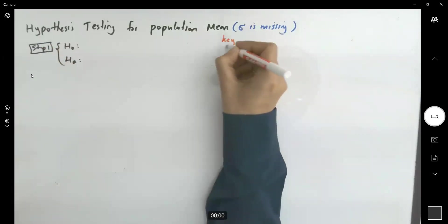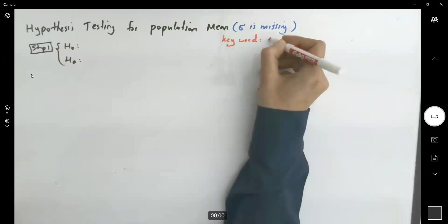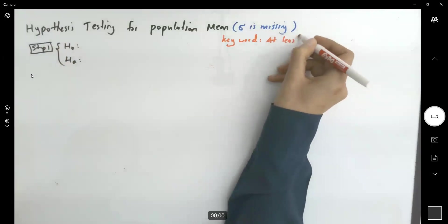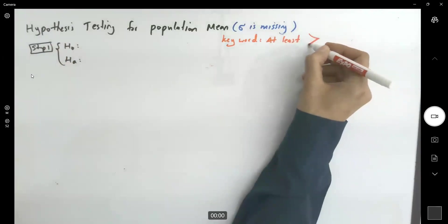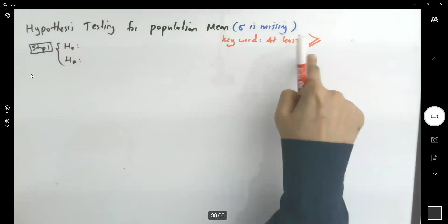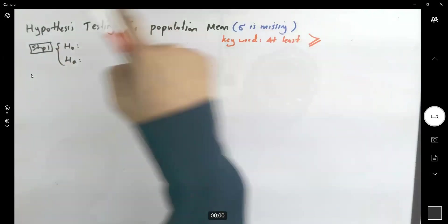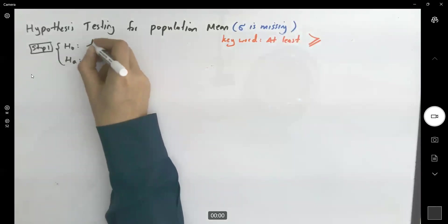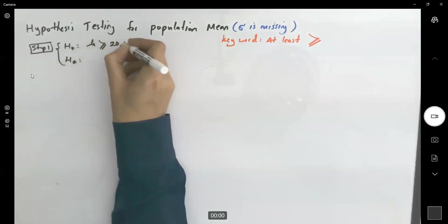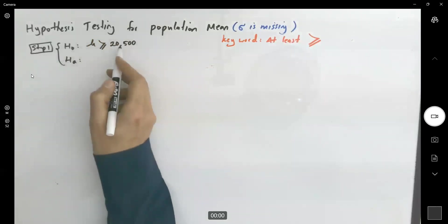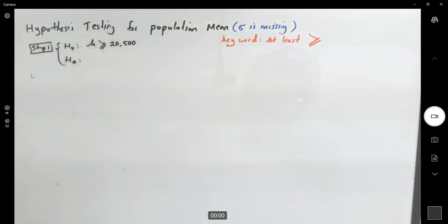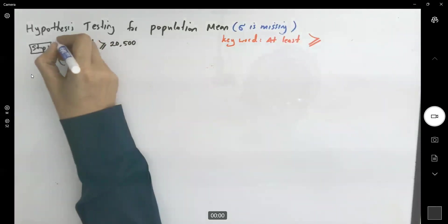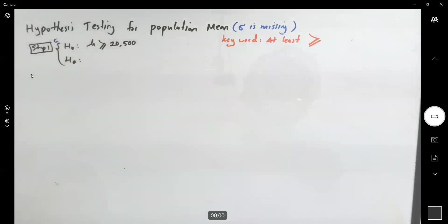Remember that we have a keyword, at least. And this is larger than or equal to. Since it has equality, it means that the null is given to us. So null hypothesis says the mean price is larger than or equals to $20,500. This is the claim of a dealer.